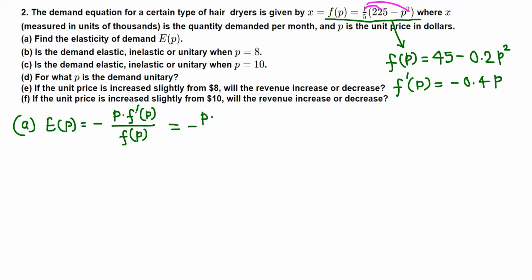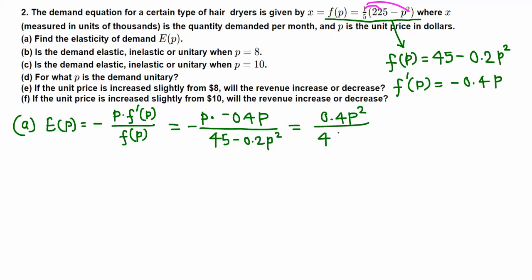Plugging into the elasticity formula: E(p) = negative p times f'(p) over f(p). We found f'(p) = negative 0.4p, so the negatives cancel. The numerator becomes 0.4p times p, which is 0.4p squared, all over 45 minus 0.2p squared. That is our elasticity of demand.